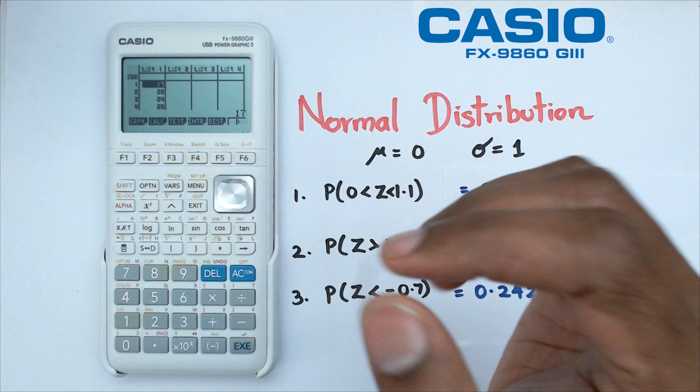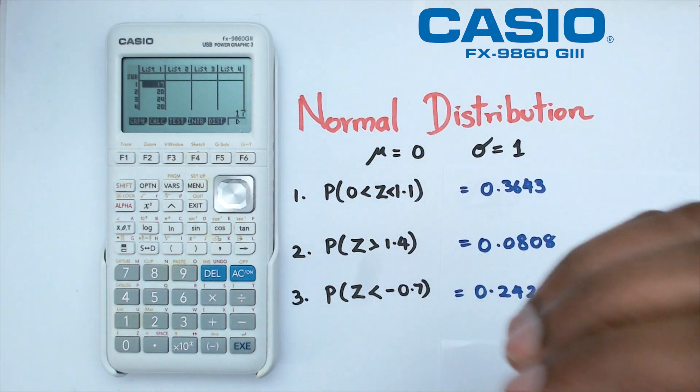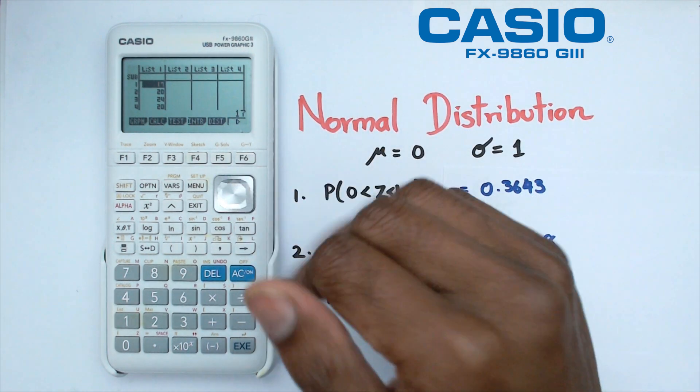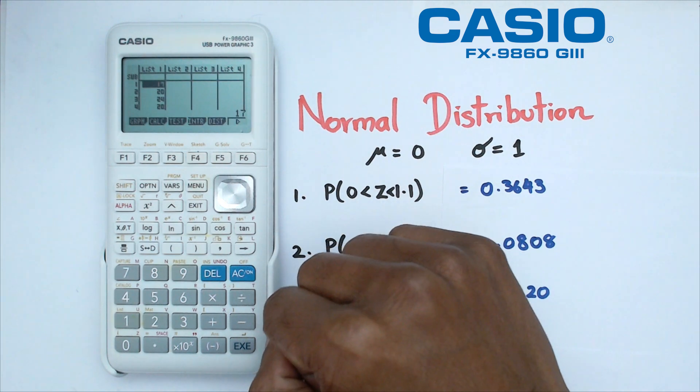All right folks that pretty much covers how to find normal distribution with a mean of 0 and standard deviation of 1 on this particular Casio graphics calculator.